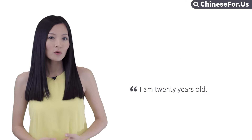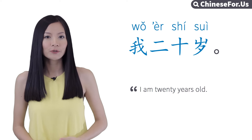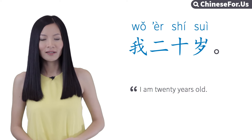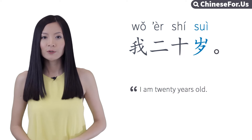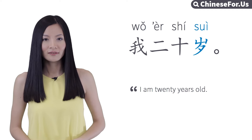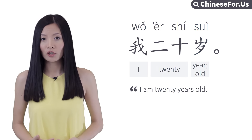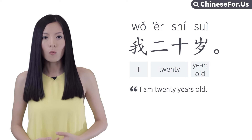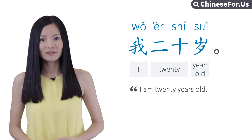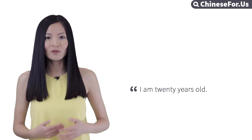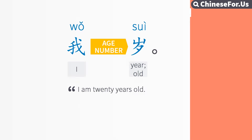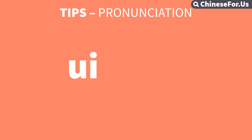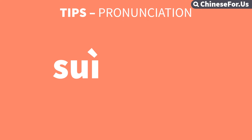Suppose you're 20 years old. 我二十岁. I 20 year — I'm 20 years old. 我二十岁. So you say 我 plus the age number plus 岁. And 岁 here is actually 岁 with a character omitted, so 岁 is actually 岁.